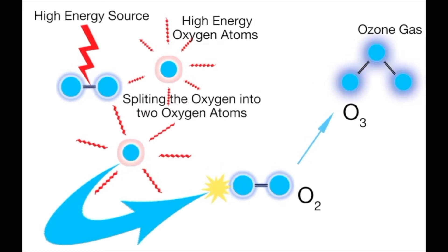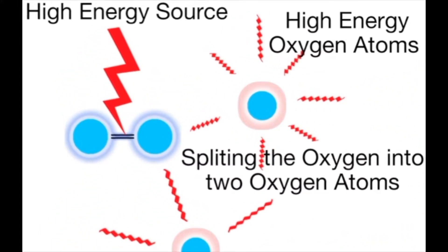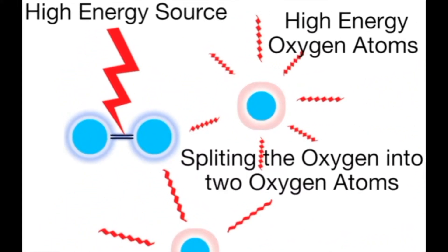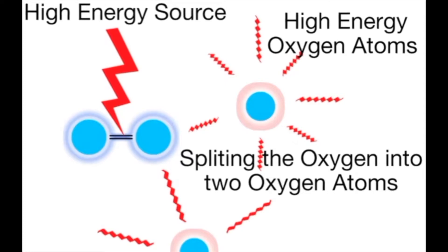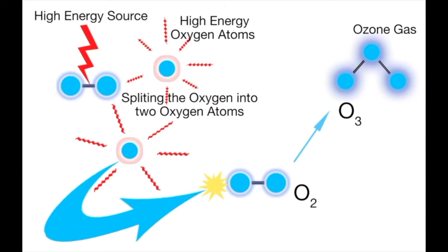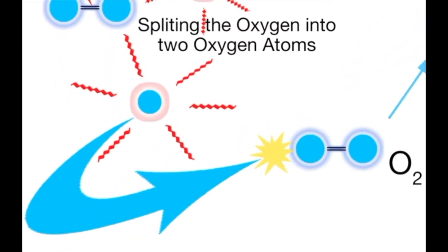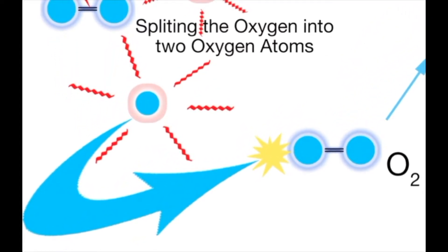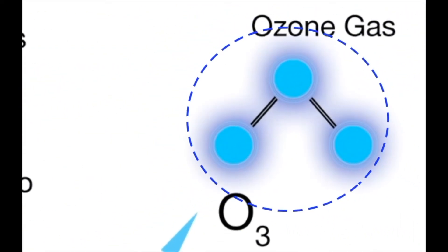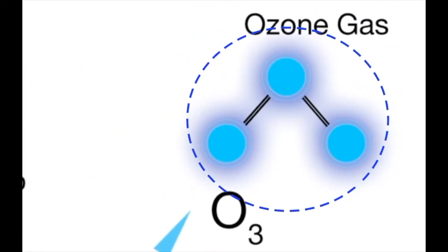The basic principle is: when oxygen is subjected to enough energy, it is broken apart into atomic oxygen. Atomic oxygen is very reactive, which means it will not hang around for very long and will react instantly with another oxygen to form ozone.